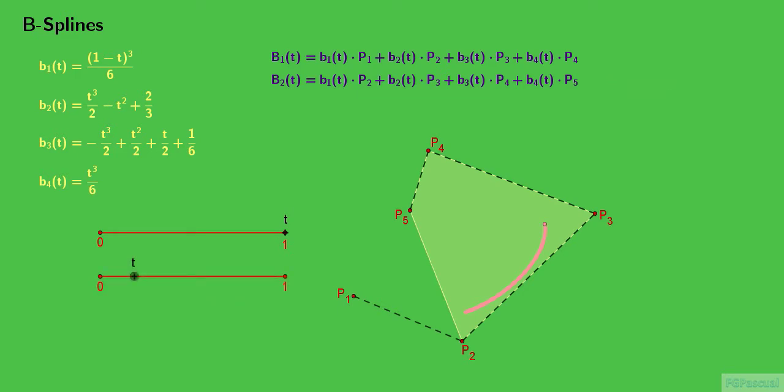Like capital B-sub-1, capital B-sub-2 should start near the second point, which is p-sub-3 for this group of points. In fact, capital B-sub-2 starts off where capital B-sub-1 ended.